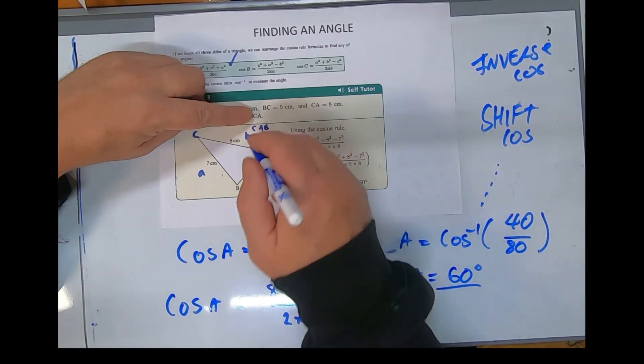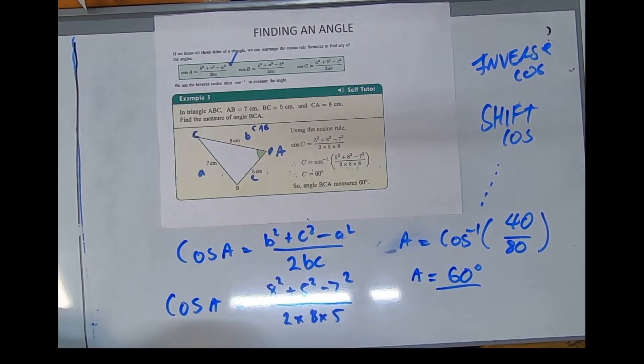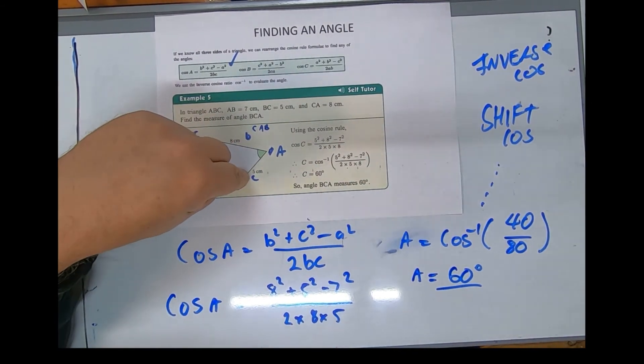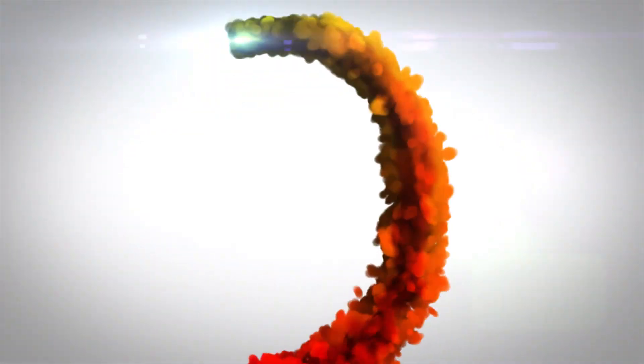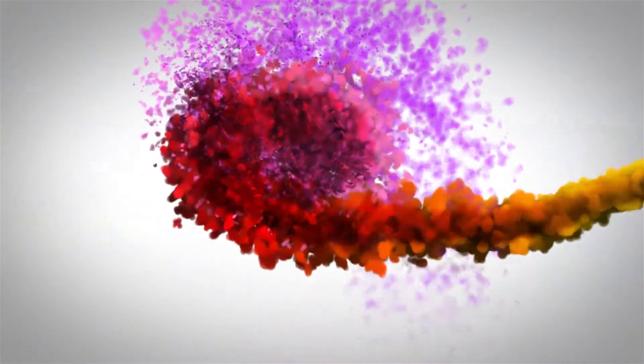That would be from C-A-B—from C to A to B. So that's finding an angle again. We can see three sides and one angle. You've been using cosine.